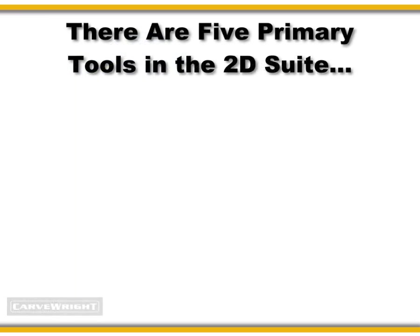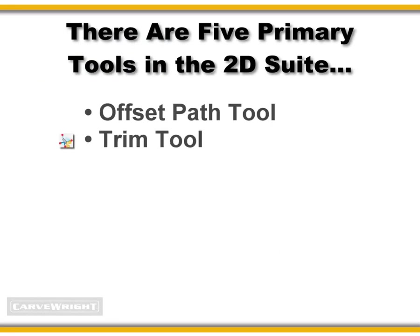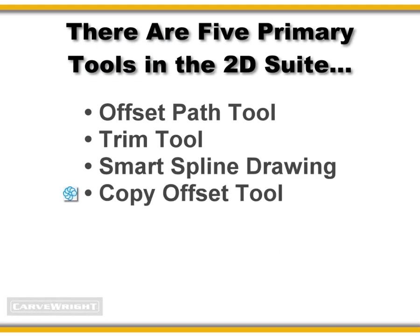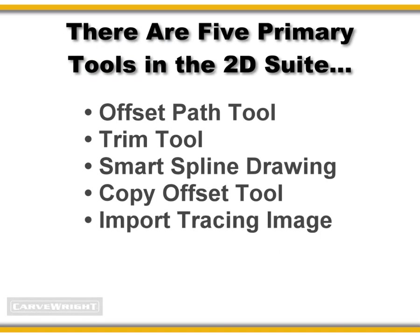There are five primary tools included in the 2D Drawing Suite: the Offset Path Tool, the Trim Tool, the Smart Spline Drawing Tool, the Copy Offset Tool, and finally the Import Tracing Image Function Tool. The names of each of these new tools really gives us a clue what they are used for, but it may be helpful to demonstrate what each one actually does.